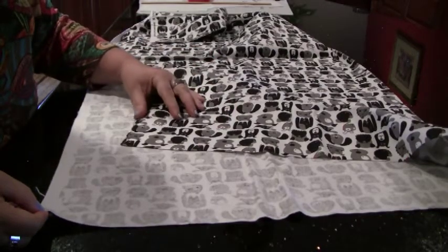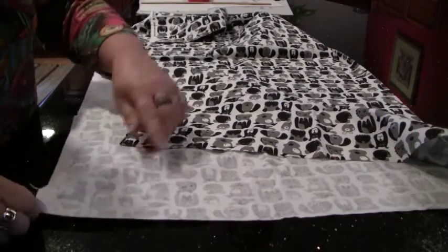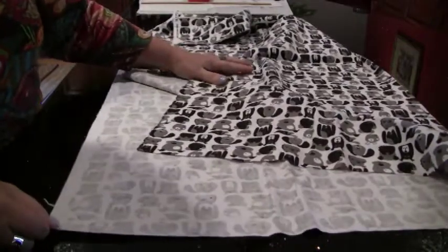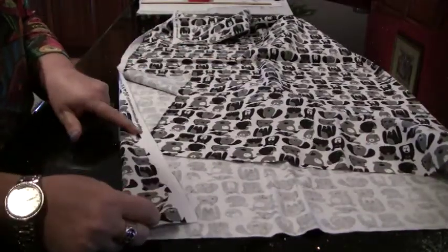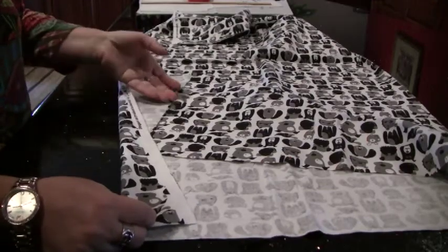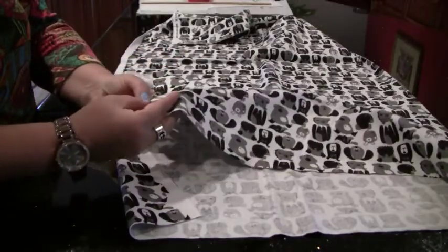The other thing that you need to look at is the cut edges and the selvage edges. So along here is the cut edges where they cut it at the store. And here we have the selvages, which sometimes have writing on it, sometimes are white, sometimes they are not white, but they will never ravel.